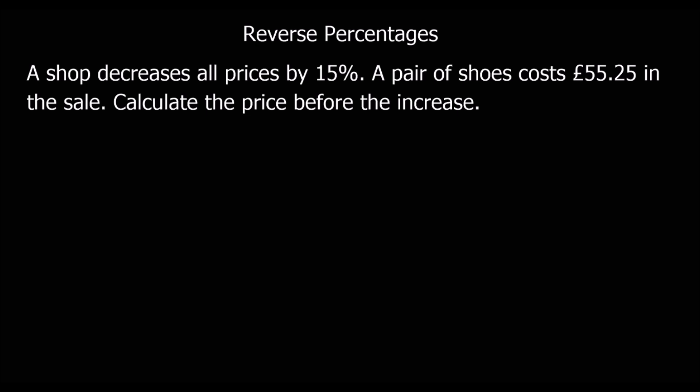A reverse percentage is when a percentage change has already happened. In this example, a shop has already decreased its prices by 15%. We can't work out 15% in the normal way of finding 10% and 5%, because taking 15% off and adding it back on won't give you the same result. So imagine I had 100 pounds.